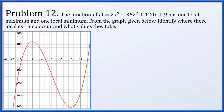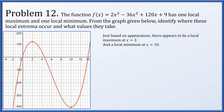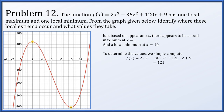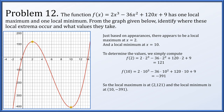In problem twelve, f(x) = 2x³ - 36x² + 120x + 9 has one local maximum and one local minimum. From the graph, there appears to be a local maximum at x = 2 and a local minimum at x = 10. We can't read the y-coordinates directly from the graph, so we compute: f(2) = 121 and f(10) = -391. The local maximum is at (2, 121) and the local minimum is at (10, -391).